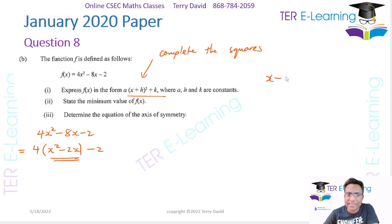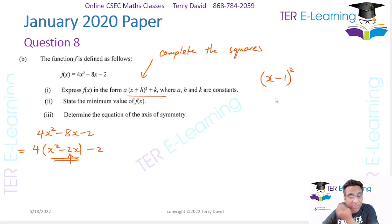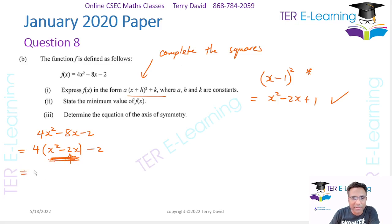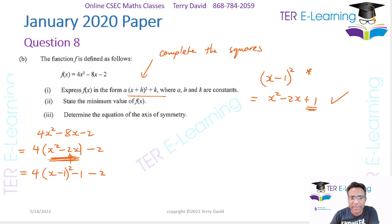What we normally do is divide the middle coefficient by 2, so we write x − 1 squared. Now x − 1 squared can be written as x² − 2x + 1. If you notice, x² − 2x here equals (x − 1)² − 1. So to replace x² − 2x, we write 4 times (x − 1)² − 1, then minus 2.